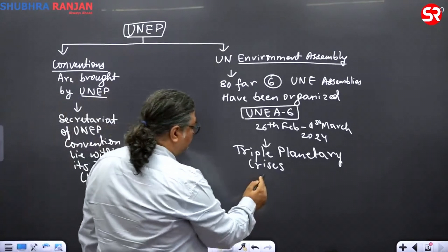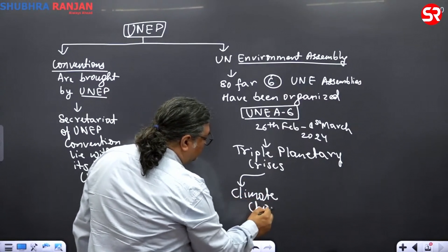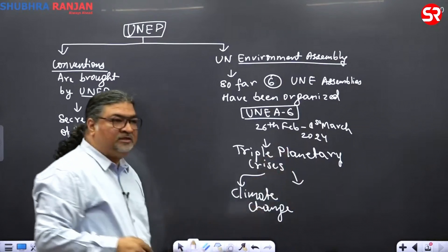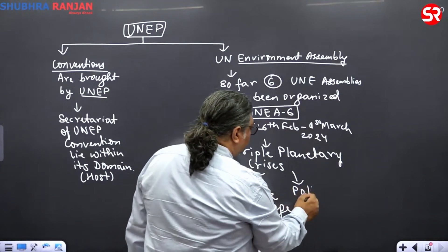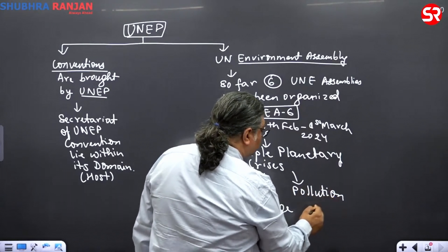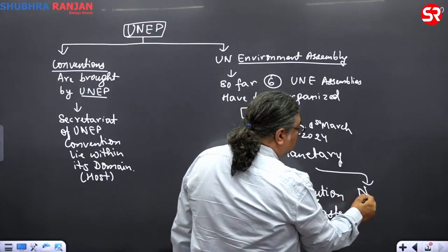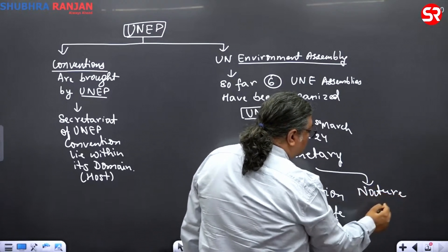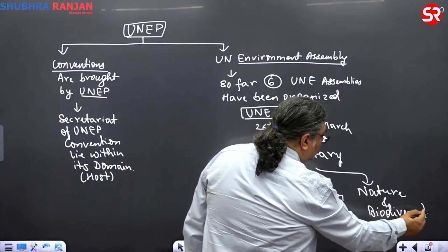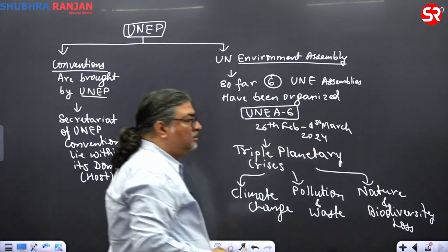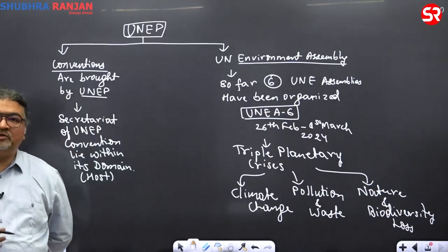The three challenges or crises are: first, Climate Change — discussion on how to tackle this challenge at the global level; second, Pollution and Waste; and third, Nature and Biodiversity Loss. Whenever such an assembly is organized, it also comes out with reports called Global Outlook Reports.